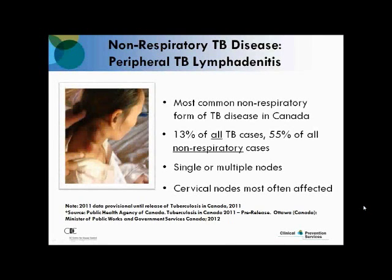Always think TB — our go-to test is the sputum. This next slide shows you the areas of the body where TB can be located. There is no area of the body that TB will not access because it can go anywhere and everywhere. Non-respiratory TB disease — the example here is peripheral TB lymphadenitis. Cervical nodes are the most often affected under TB lymphadenitis. It's important when assessing other areas: if a client complains of swelling or pain in areas other than what you're treating them for, pay attention — maybe there's TB in other areas of the body as well. Our philosophy is: if it looks like a duck and quacks like a duck, it's probably TB.